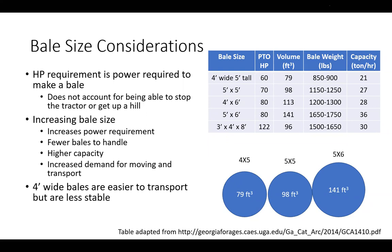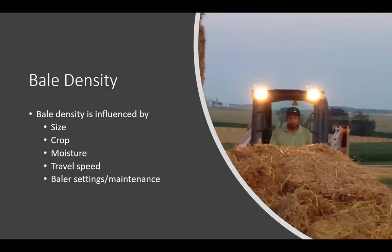Four-foot wide bales are easier to transport. If you're getting closer to Cincinnati — say Kenton County — you're probably looking at smaller 4x5 bales to avoid transport issues. Bale density is influenced by baler size, amount of material, crop moisture, travel speed, baler settings, baler manufacturer, and maintenance performed on the baler. Ideally, you want the bale as dense as possible while still allowing the animals to pull off material as needed.